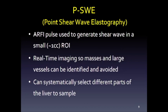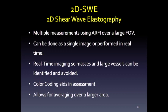For point shear wave, we use an ARFI pulse — an acoustic radiation force impulse — which is a high-energy pulse that generates shear waves. We're looking at about a 1-millimeter area in real time, so we can identify masses and vessels and avoid those when taking measurements. 2D shear wave uses the same principle but over a much larger area, and we place an ROI within that box to get a reading.